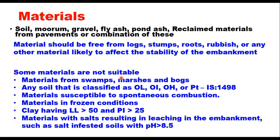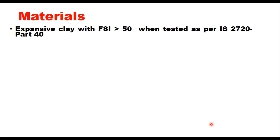Some materials are not considered suitable for making embankment. These are materials from swamps, marshes and bogs; any soil classified as OL, OI, OH or peat as per IS 1498; materials susceptible to spontaneous combustion; materials in frozen conditions; clay having liquid limit of more than 50 and plasticity index of more than 25; or materials with salts resulting in leaching in the embankment, such as salt infested soils with pH value more than 8.5; or expansive clay with free swelling index of more than 50 when tested as per IS 2720 Part 40.